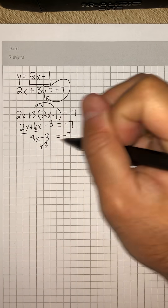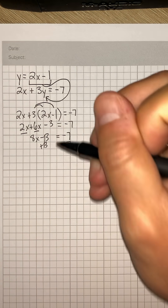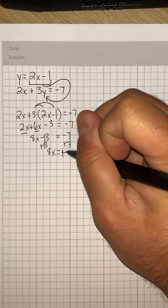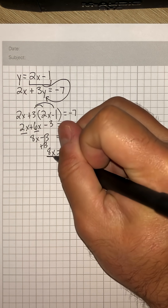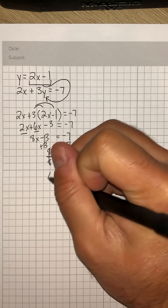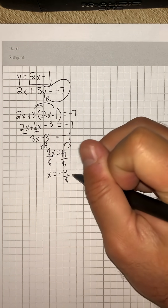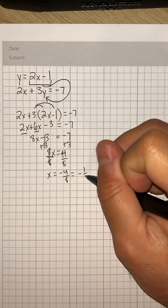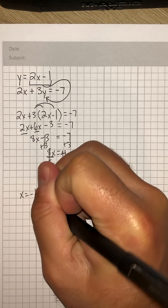Now we're going to add 3 to both sides, giving us 8x is equal to negative 4. Then we divide by 8 on both sides to get x is equal to negative 4 over 8, which reduces to negative 1 half. So we know that x is equal to negative 1 half.